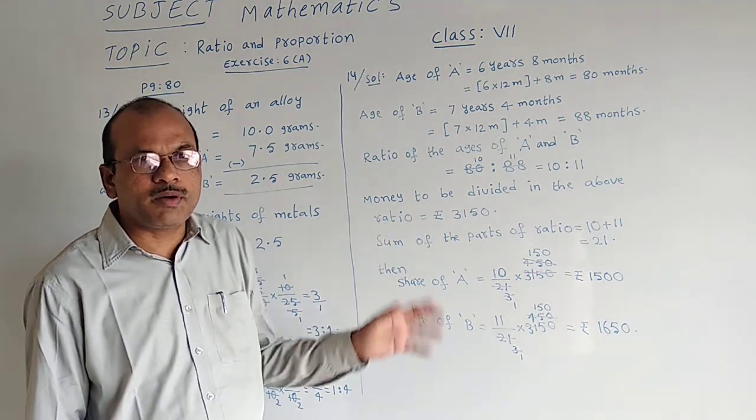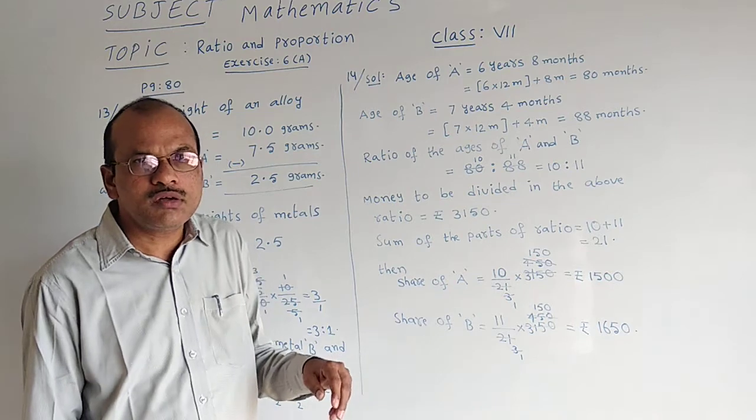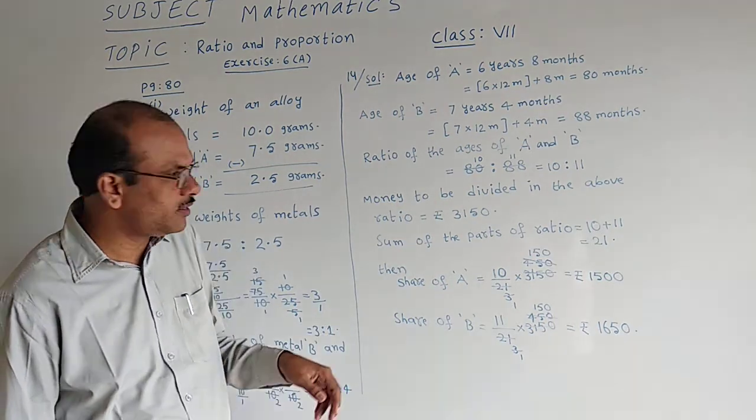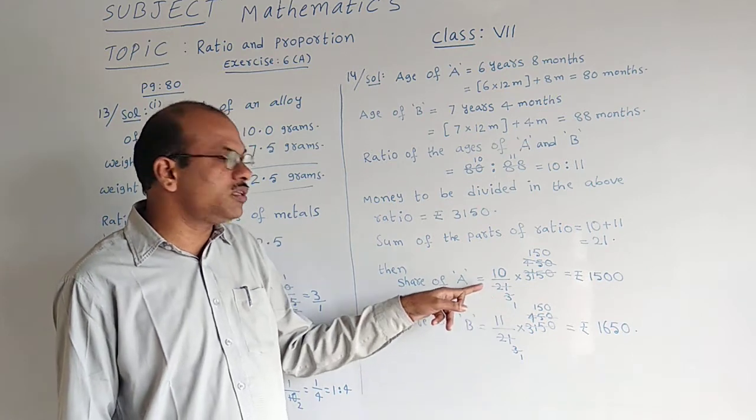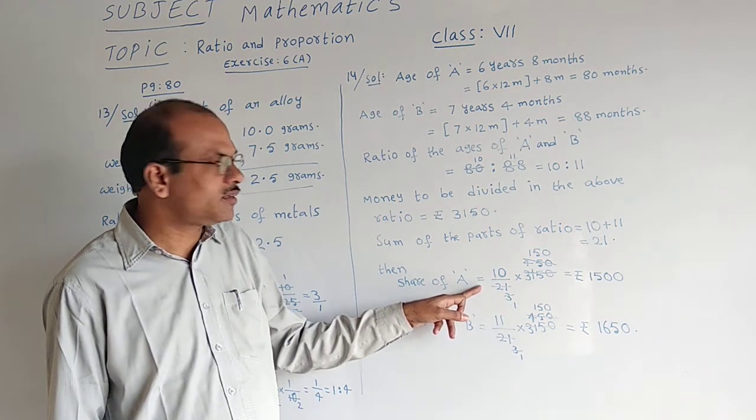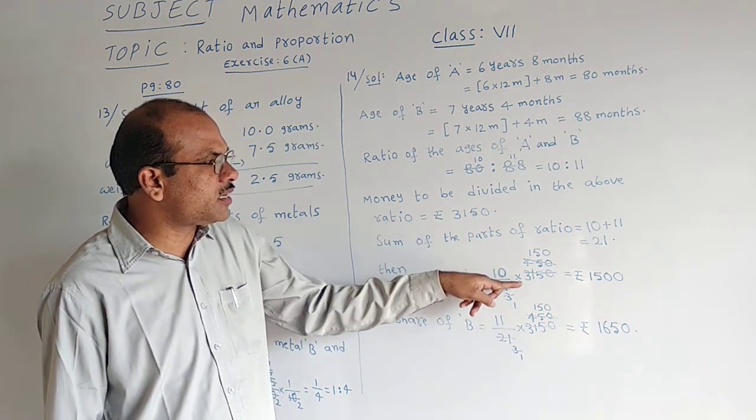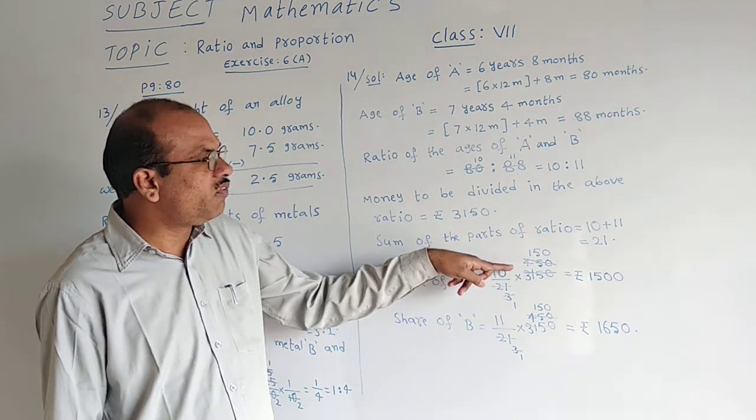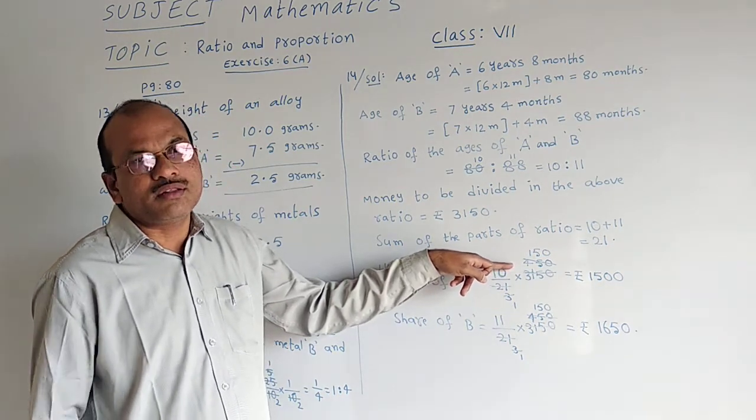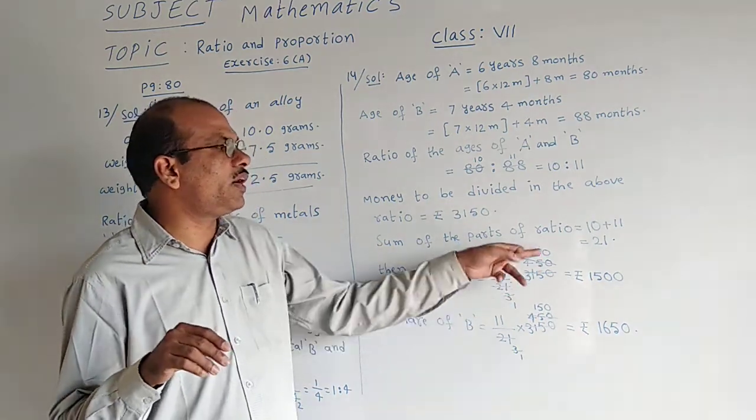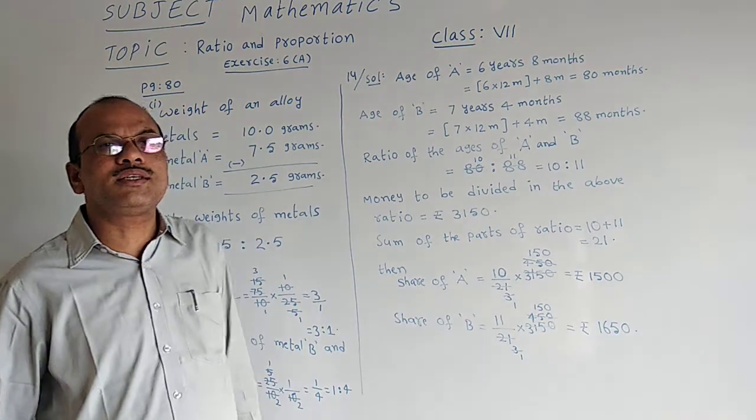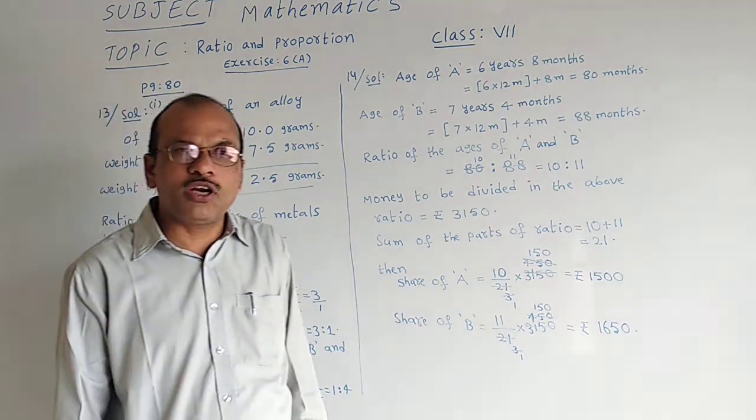This type of sums we have done already. Now 7th table I have used first. 7 threes are 21. Again 7 fours are 28 filled in the 31. Then 3 left to side 5, 35. 7 fives are 35. And last 0 as it is dropped.